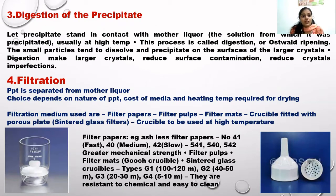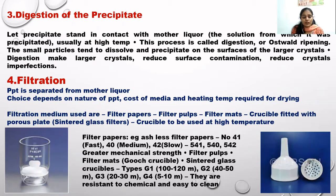The next step is digestion, which means growing the precipitates that have been formed. This dissolves impurities and gives large crystals. Digestion is generally done by heating the mother liquor containing the precipitates to a suitable high temperature and keeping the solution aside for 2 to 24 hours — or overnight — before filtering the precipitates the next day.